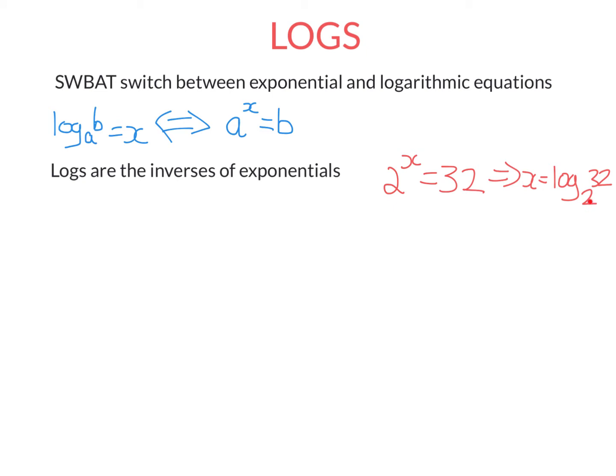Log 2 of 32 is saying exactly the same as this equation. Log 2 of 32 says, what power do you raise 2 to in order to get 32? And the answer is 5 because 2 to the power of 5 equals 32.